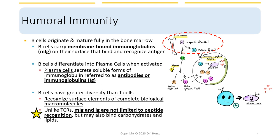If you recall from last lecture, I emphasized on the term peptides. T cell receptors can only recognize peptides. But unlike T cell receptors, both membrane-bound immunoglobulins and soluble immunoglobulins are not limited to peptide recognition. They can also bind to carbohydrates and lipids.